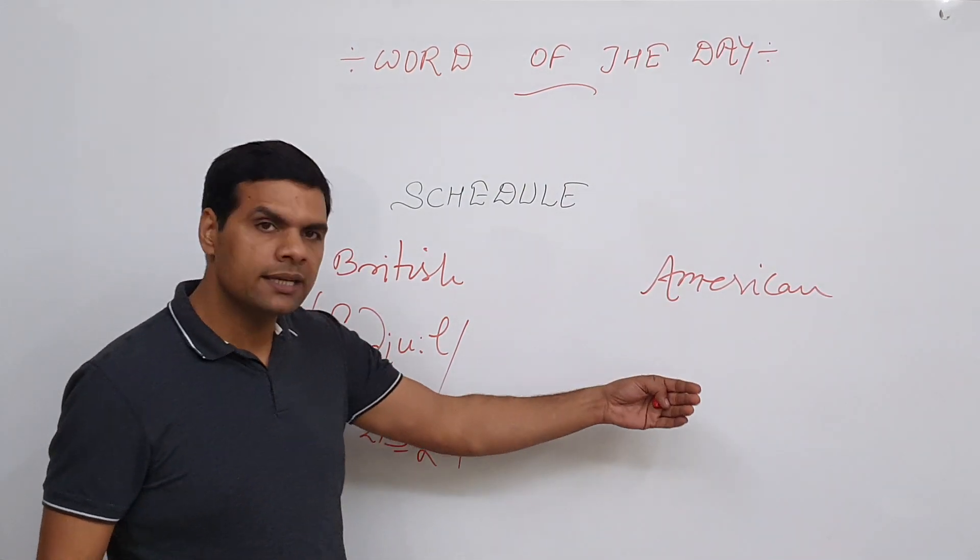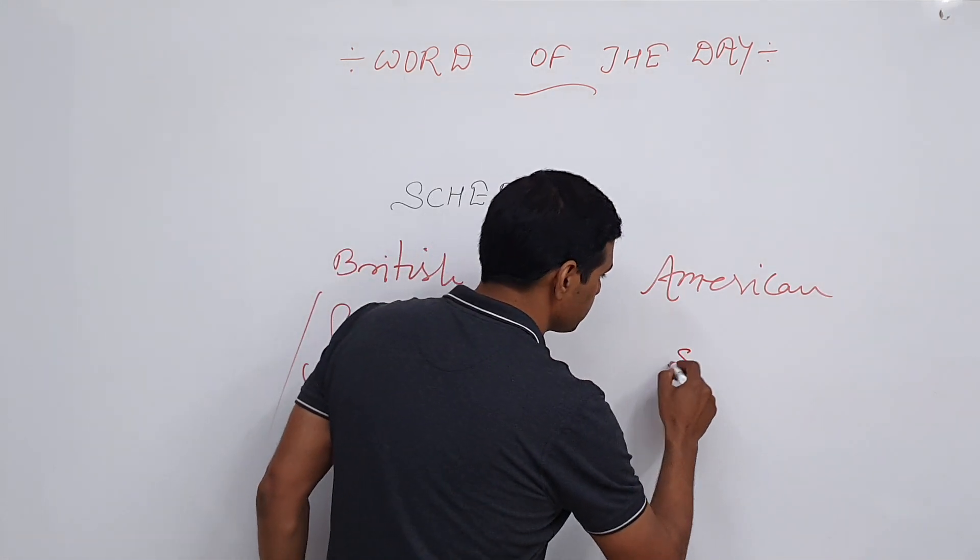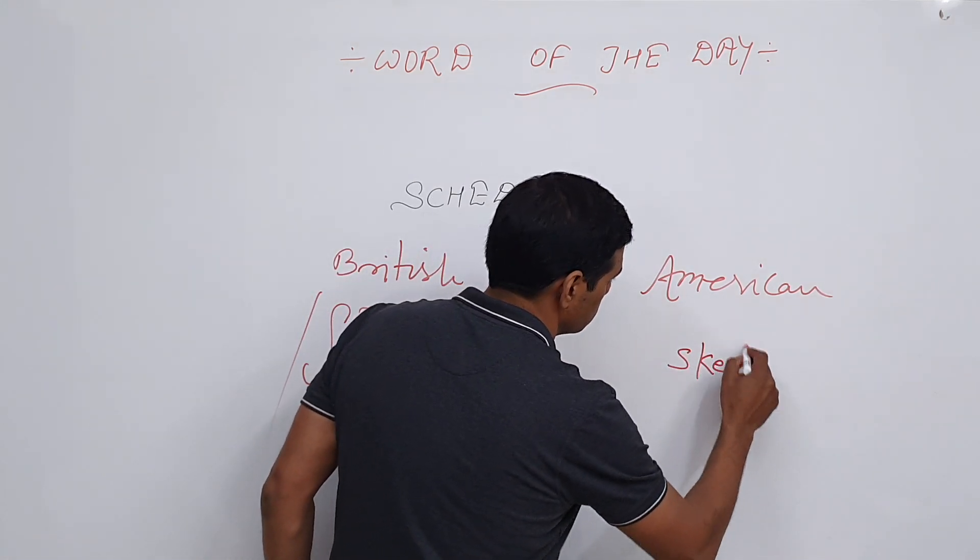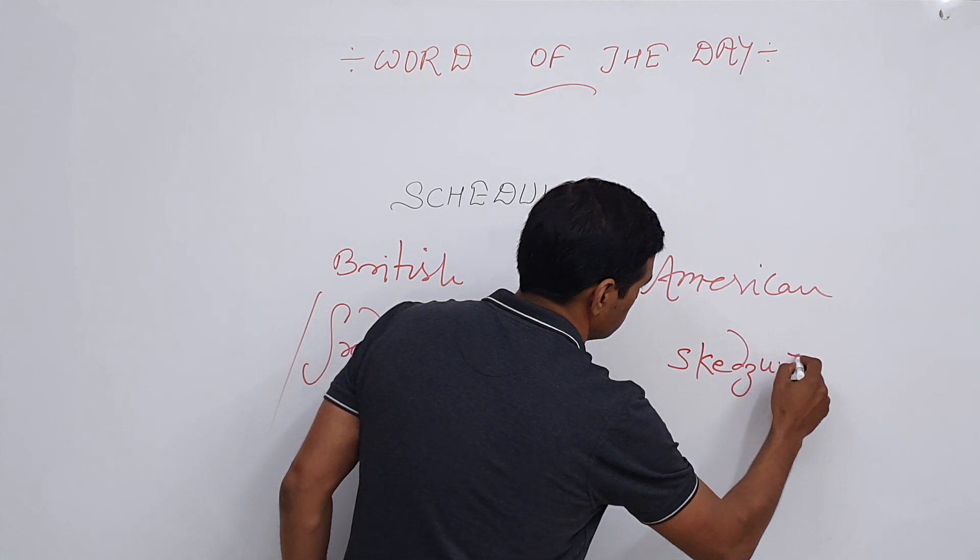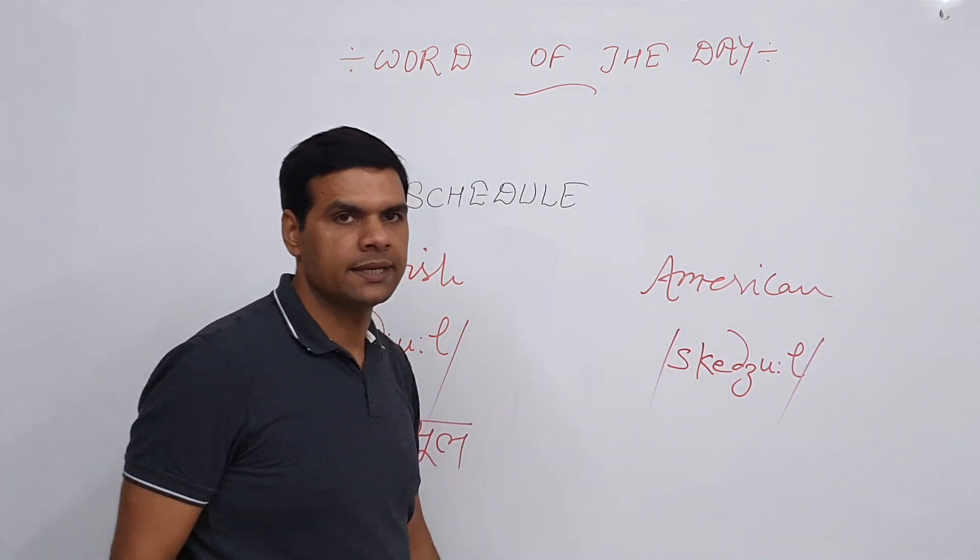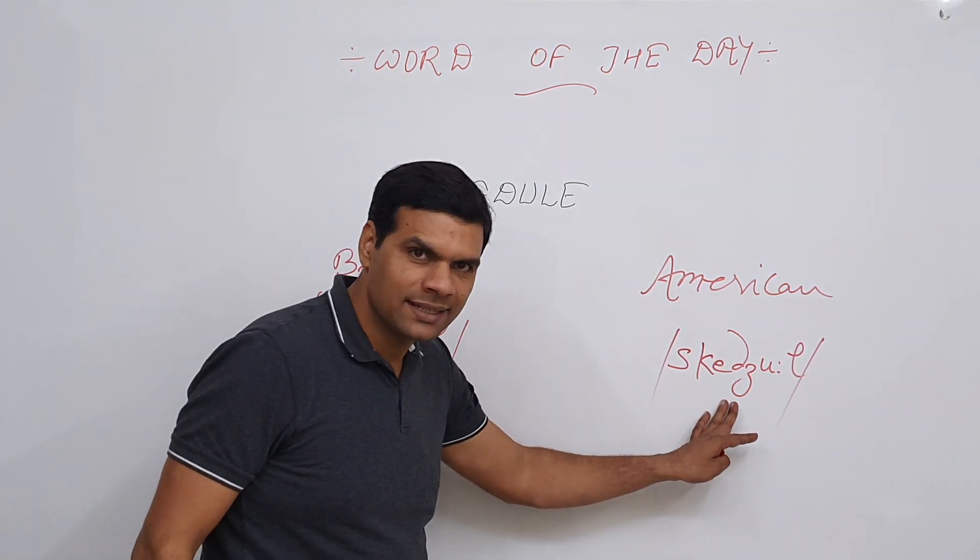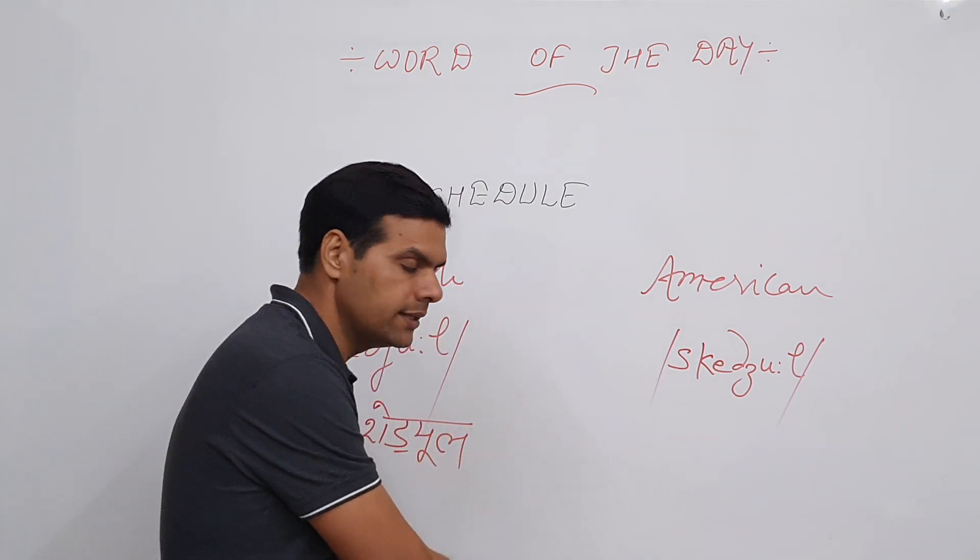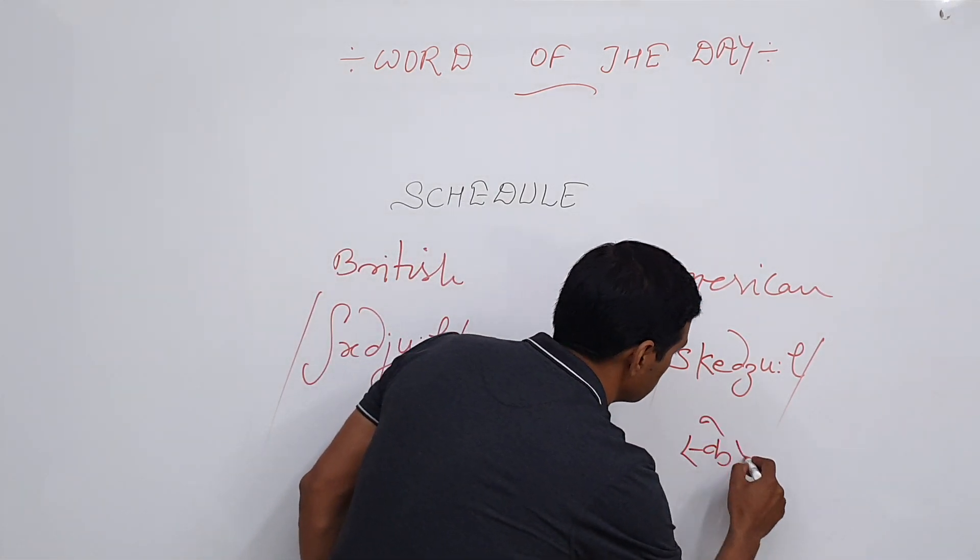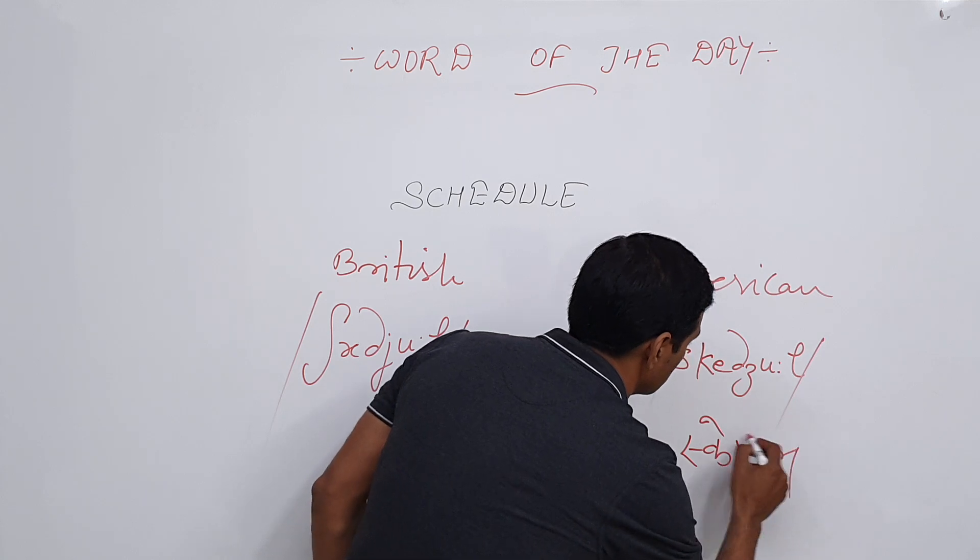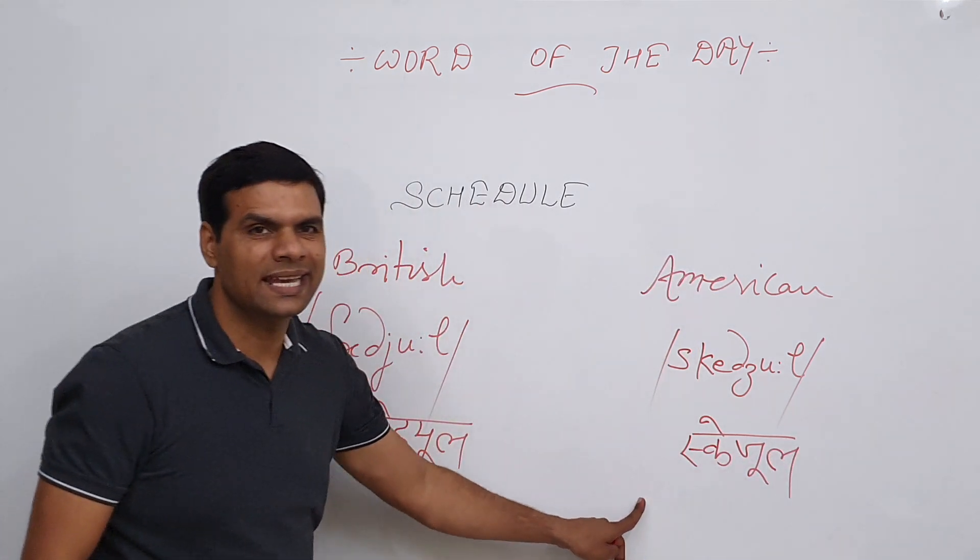Then what is the American way of saying this word? Well, the same is [writes on board]. This is how they speak it. Find it a little challenging? Okay. Let me write it in Hindi. [Writes Hindi script]. It becomes 'schedule.' Schedule.